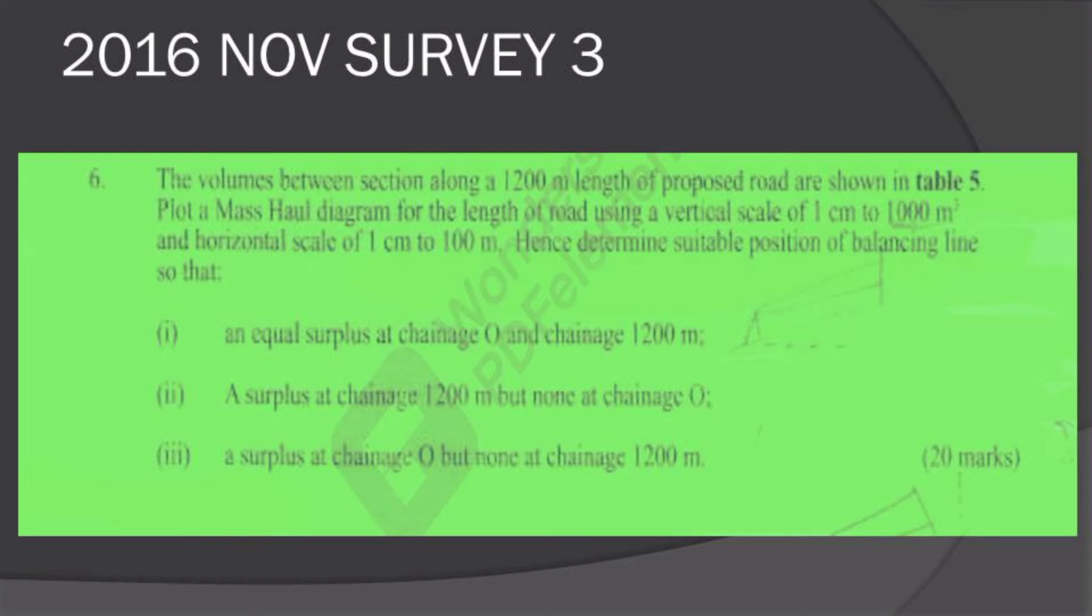Moving on ahead, we are to plot for this length of road to a suitable scale and determine their suitable position for the balancing lines so that there is, as you can see there in the question paper, (i) the surplus at change 1200 but none at 0, and (ii) the surplus at change 0 but none at change 1200, the last and equal surplus at change 0 and change 1200.